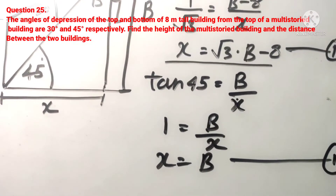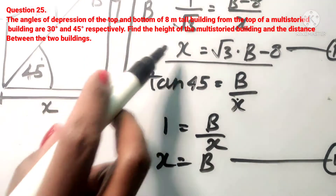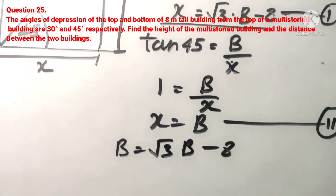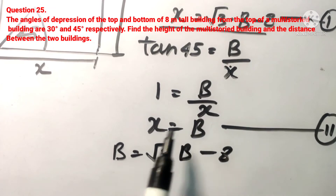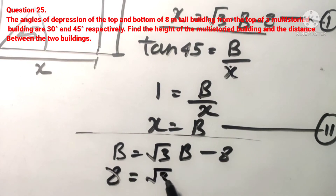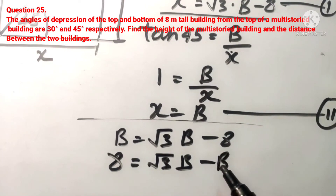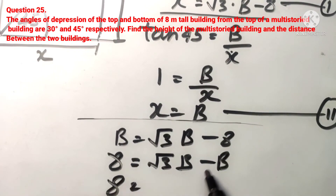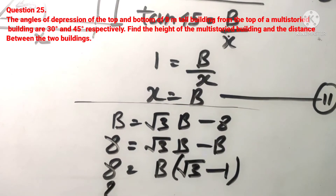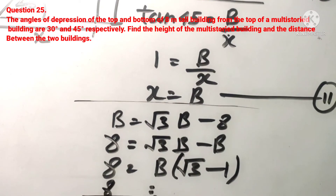Now we have two equations. We substitute the value of x from equation 2 into equation 1. So b equals root 3 times (b minus 8). Expanding: b equals root 3·b minus 8·root 3. Rearranging, 8·root 3 equals root 3·b minus b, which gives 8·root 3 equals b(root 3 minus 1). Therefore, b equals 8 upon (root 3 minus 1).